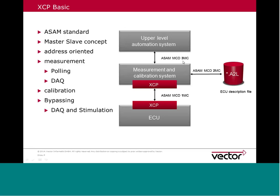There is an additional interface — interface number 3 — to connect an automation system with the measurement and calibration system, but this is not the focus here. XCP is address-oriented and its complete goal is to handle measurement and calibration, providing read and write access to ECU content. There are two kinds of measurement: polling, which means requesting the content of a specific address on demand, and DAQ — data acquisition — which is an event-driven measurement mode.